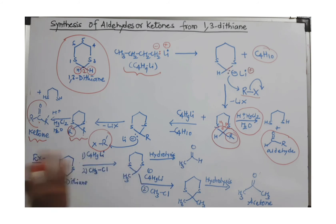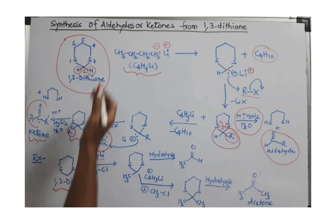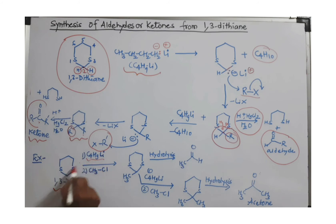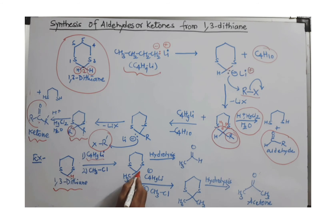You can take a specific example. 1,3-dithiane is taken here. Again, the first step is similar as mentioned in the general scheme. You have to treat this with n-butyl lithium to remove the hydrogen which is present on carbon number 2, and then we get this carbanion. Treat with methyl chloride if you want to attach a methyl group.